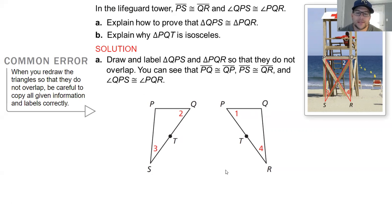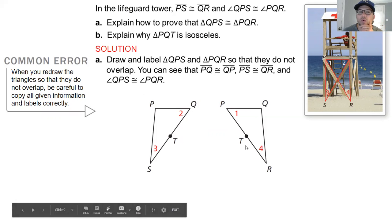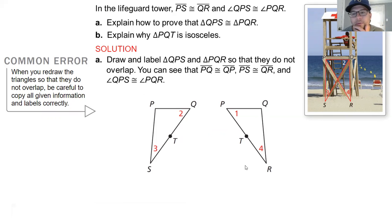So we can see that based on the overlapping triangles that the sides that are the same are PQ based on the reflexive property. So PQ is the same as QP. And then PS is the same as QR. That's given information up here at the top of the problem. And angle QPS is the same as angle PQR. So we're going to go ahead and mark those lines as congruent and then mark that angle as congruent.